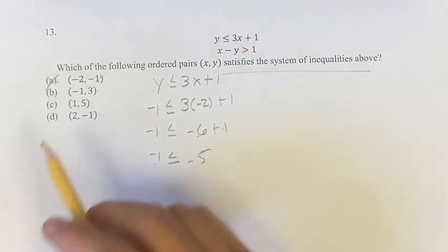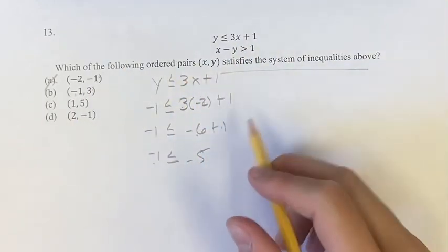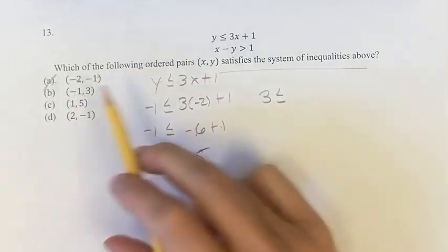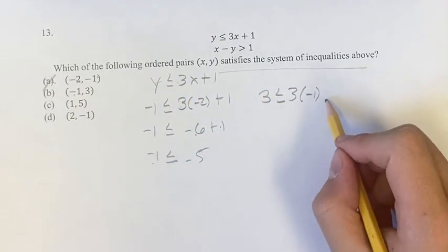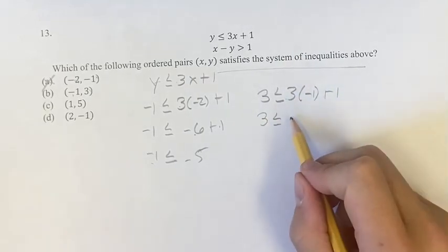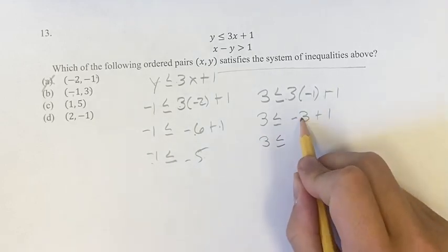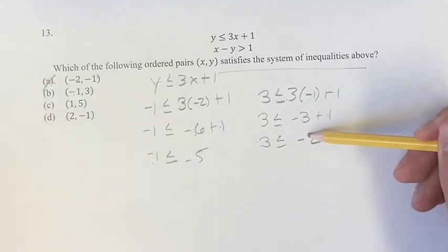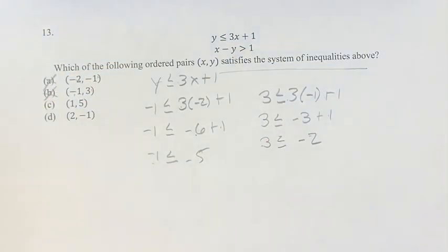Moving on to B, x = -1, y = 3. Doing the same thing: y ≤ 3x + 1 gives us 3 ≤ 3(-1) + 1, so 3 ≤ -3 + 1, which is 3 ≤ -2. 3 is not less than or equal to -2, it's greater than -2. So B is not your answer either.